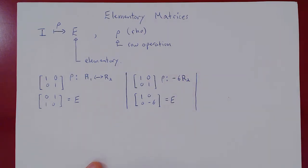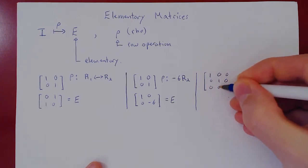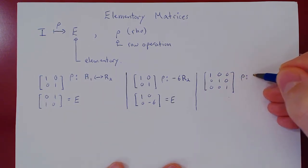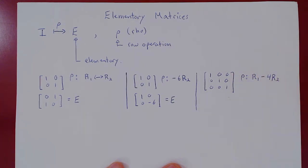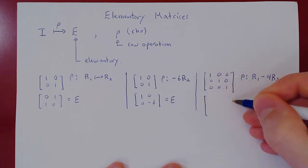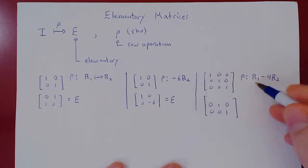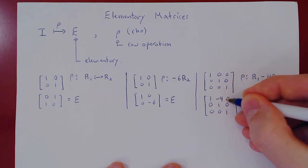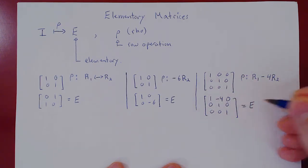You could take the 3 by 3 identity matrix: 1, 0, 0, 0, 1, 0, 0, 0, 1, and apply the third type of row operation. Suppose we take row 1 and subtract from it 4 times row 2. We are only changing row 1, so we recopy rows 2 and 3. Then row 1 becomes: 1 minus 4 times 0 is 1; 0 minus 4 times 1 is negative 4; 0 minus 0 is 0. This matrix is obtained from I by applying a single row operation, so it is called elementary.